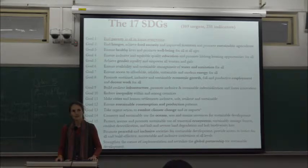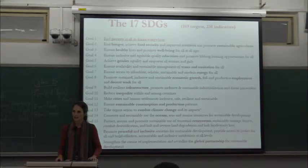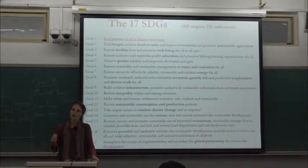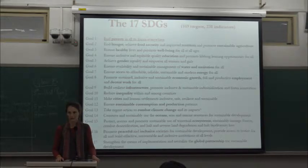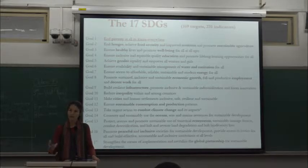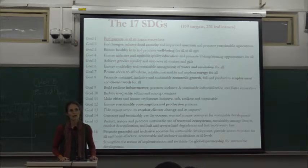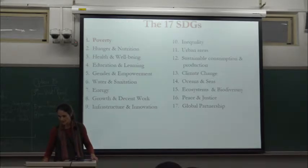An inter-agency expert working group was set up to identify the indicators that would be used to measure those targets. The goal of reducing poverty has a strong prominence in the SDGs that was not always certain, because there was a real intergovernmental process which came together with a UN process in the past two years.